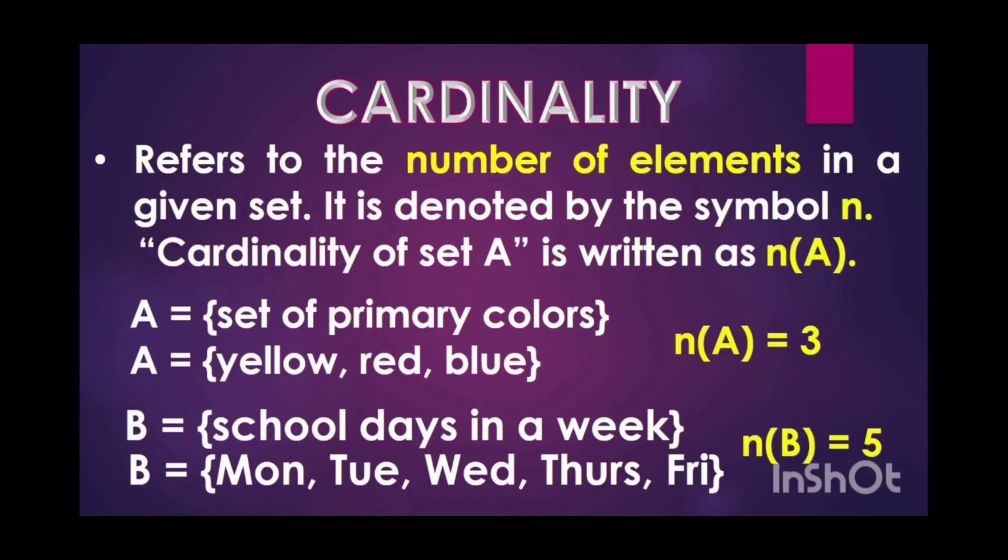In set A, set of primary colors, we have yellow, red, and blue. Therefore, the cardinality of set A is equals to 3.